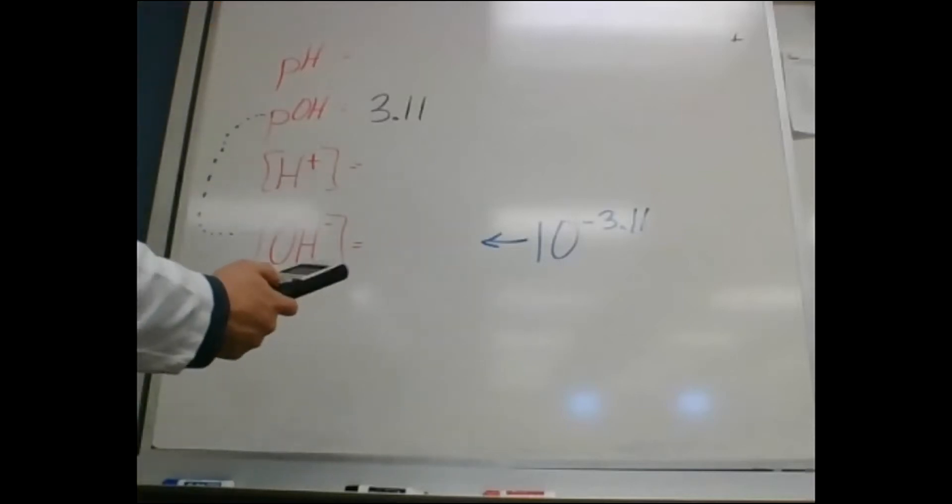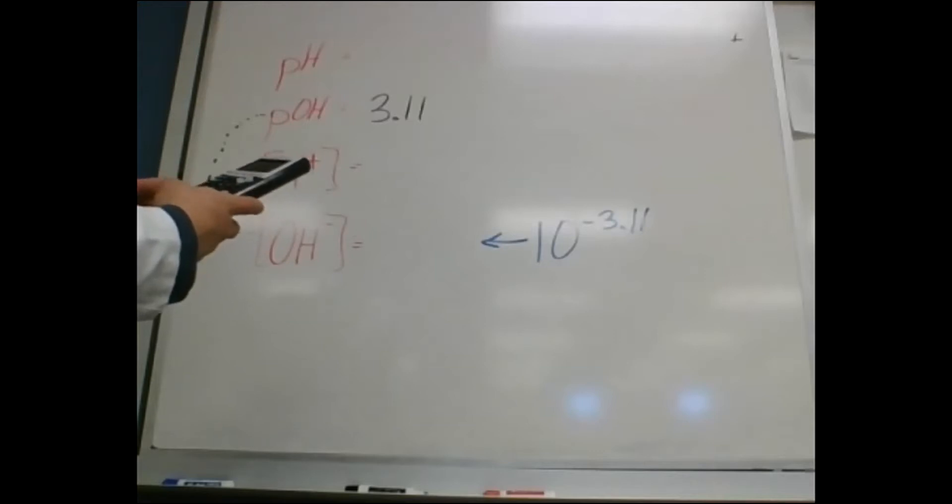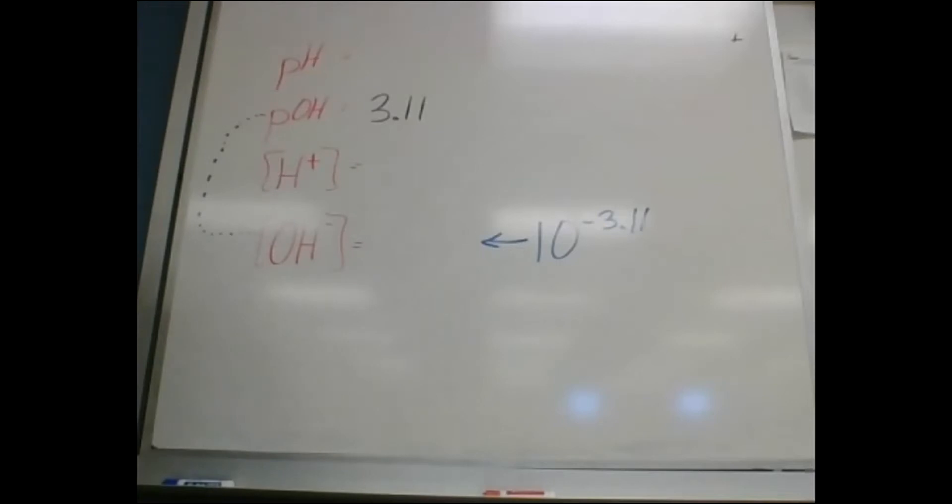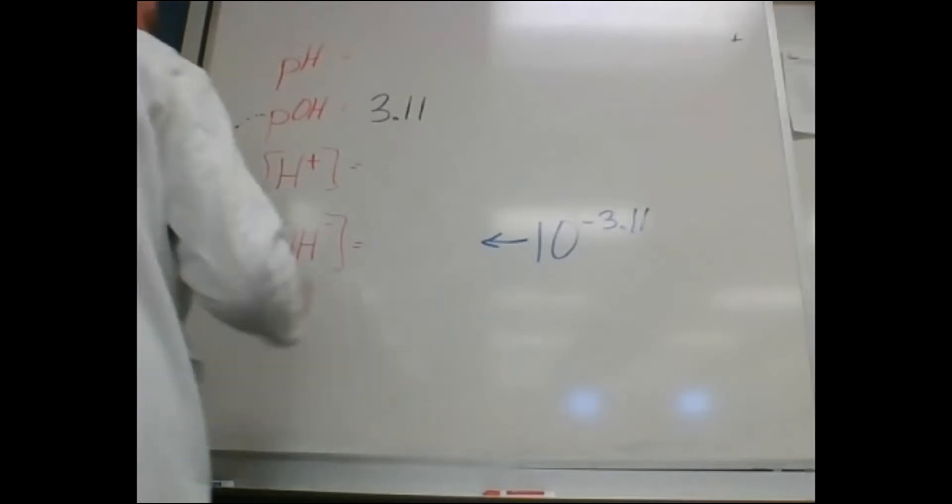All right, so if I do that, if I go 10 to the power of negative 3.11, and we're only going to go to two sig figs because there's only two sig figs there, I get 7.8 E negative 4.